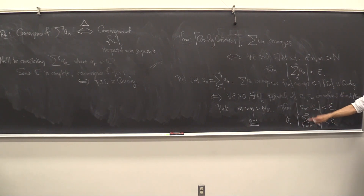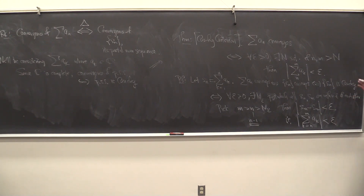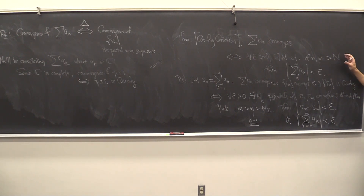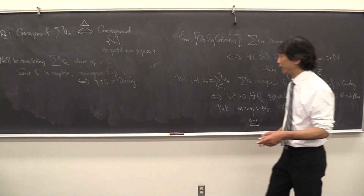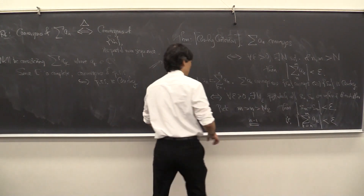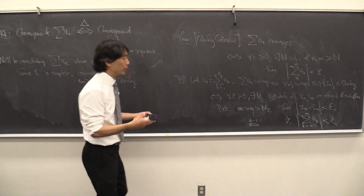So convergence of the series is the same as being able to control the size of the partial sum tails. Convergence of the series corresponds to convergence of the partial sum sequence, which corresponds to Cauchy-ness of the partial sum sequence. Cauchy-ness means that given any ε, you can find a time past which the size of the tail is smaller than ε. The Cauchy criterion is not deep — but we'll use it a lot.